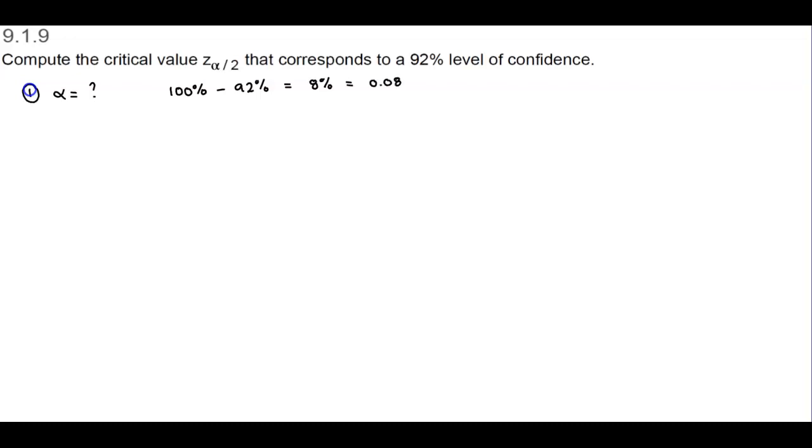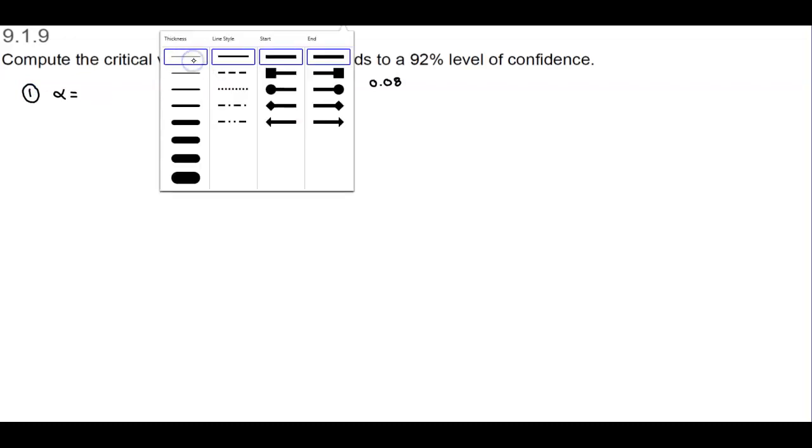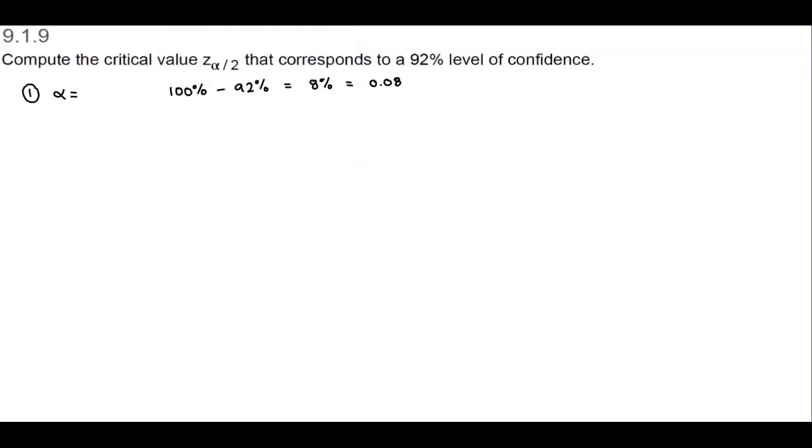Alpha now represents 0.08. Now we're going to take this alpha and divide it by 2. If we take 0.08 and divide that by 2, that gives us 0.04.